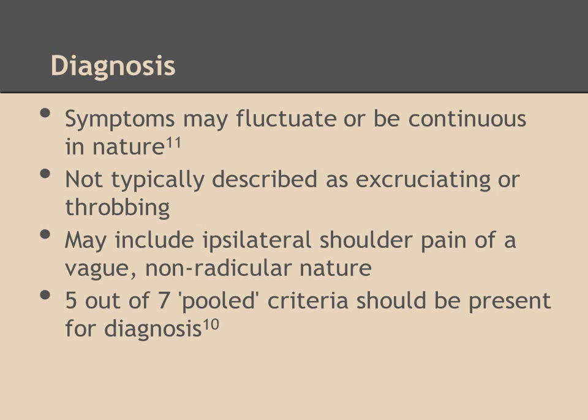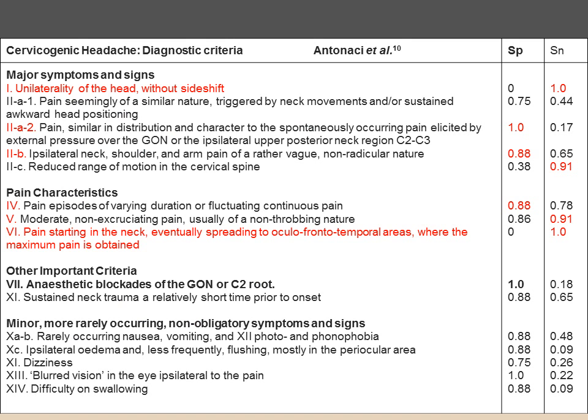This slide describes the nature of the symptoms and notice 5 out of 7 pooled diagnostic criteria should be evident. This table represents the diagnostic criteria outlined by Antonossi. The Roman numerals outlined in red represent the 7 pooled criteria referred to on the previous slide, and the sensitivities and specificities of each criterion are noted on the right side.